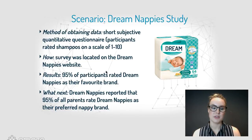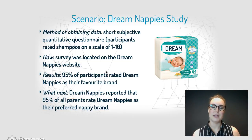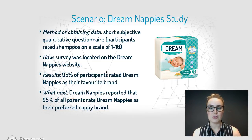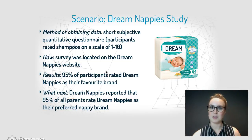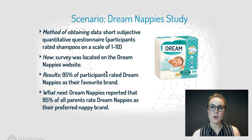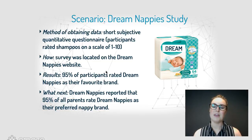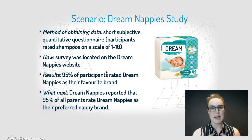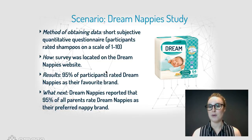Think about this scenario, because you'll need to respond to these kinds of scenarios throughout the year. There is a Dream Nappies study — a company I've come up with. We obtained data through a short, subjective, quantitative questionnaire where participants rated their favourite shampoos on a scale of 1 to 10. The survey was located on the Dream Nappies website, so data could only be collected if people visited the site and clicked to complete the survey. Our results showed that 95% of participants rated Dream Nappies as their favourite brand. My company then reported that 95% of all parents rate Dream Nappies as their preferred nappy brand.